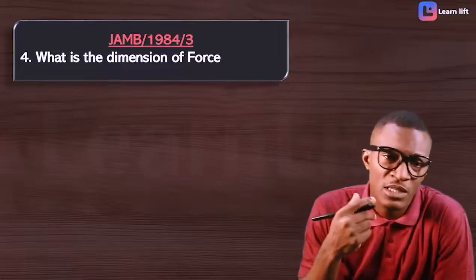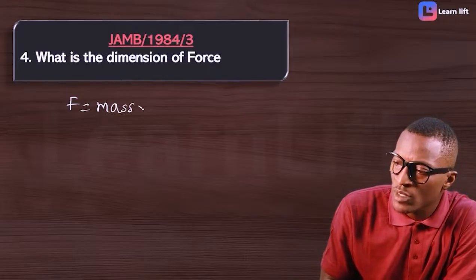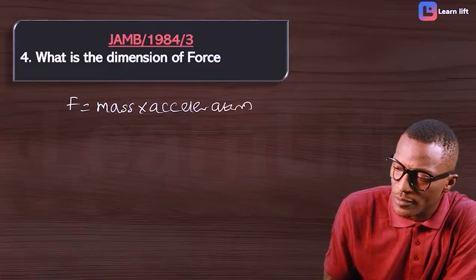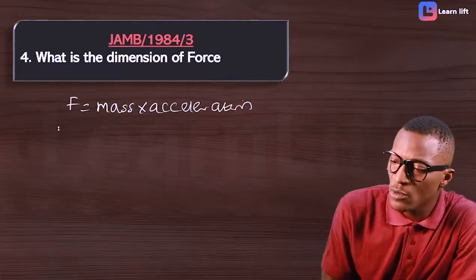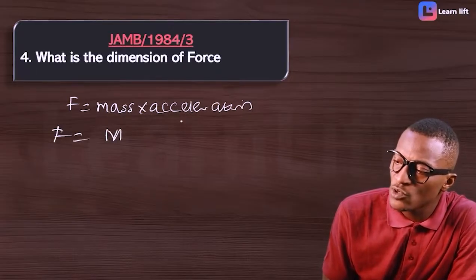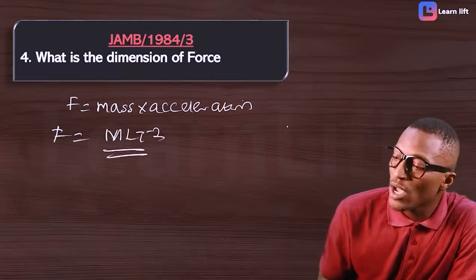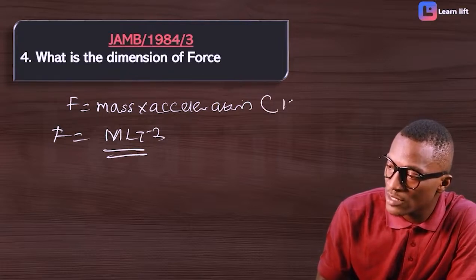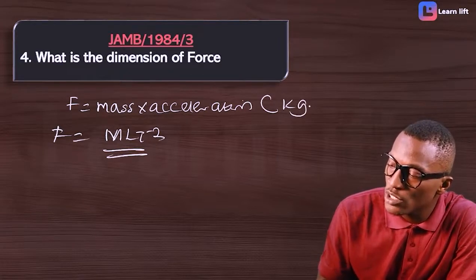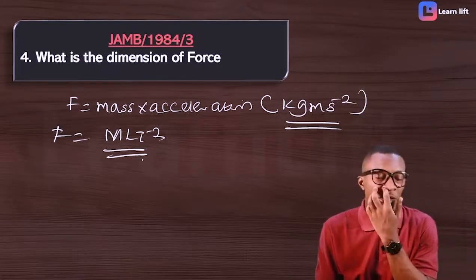JAMB 1984 question: what is the dimension for force? Force equals mass times acceleration. In dimension, mass is capital M and acceleration is LT⁻², so force has dimension MLT⁻². In units, mass is in kilograms and acceleration is meters per second squared, giving kilogram·meter·second⁻².